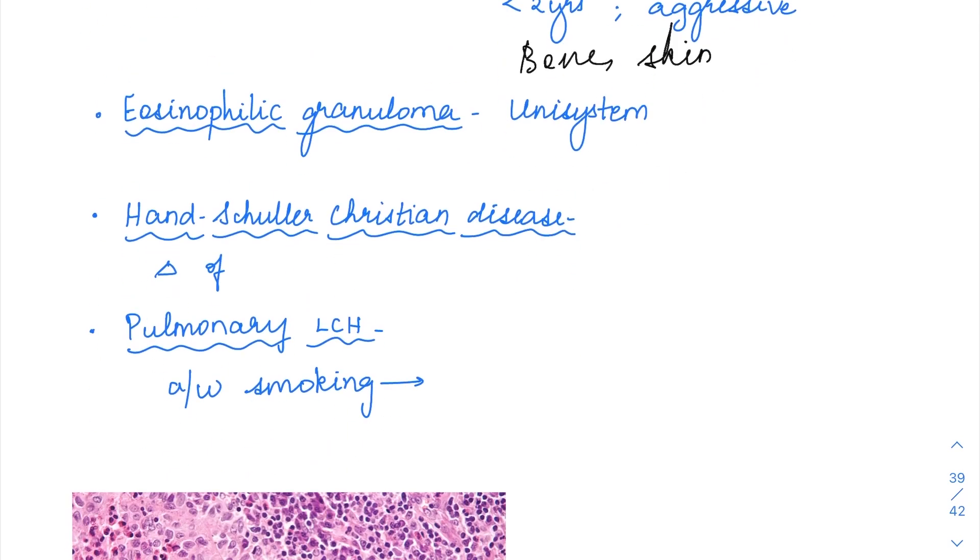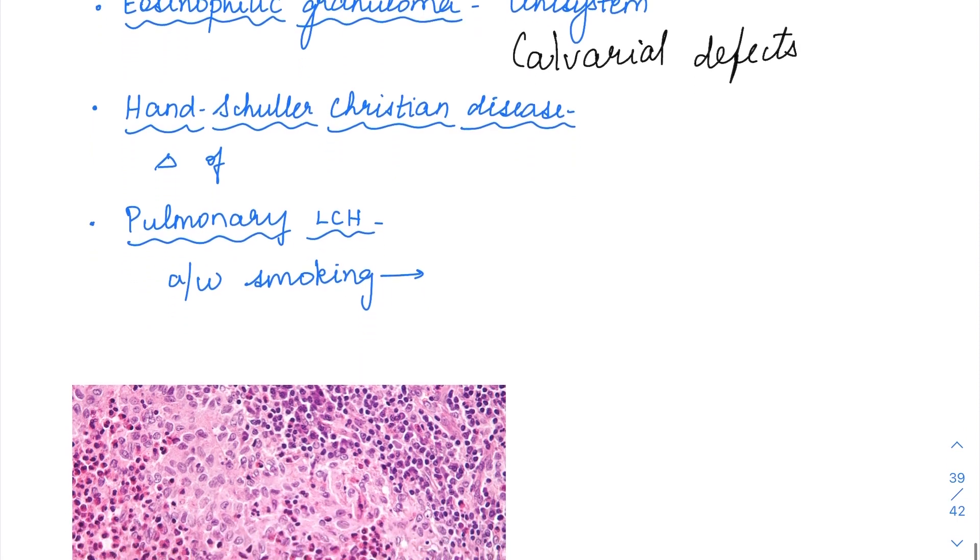The second form will be the eosinophilic granuloma. As the name suggests, you are going to have lots of eosinophils in this thing and this is a unisystem disease. Usually, it is going to involve the calvarial defects. Calvarium means the skull. Calvarial defects is going to be present in eosinophilic granuloma.